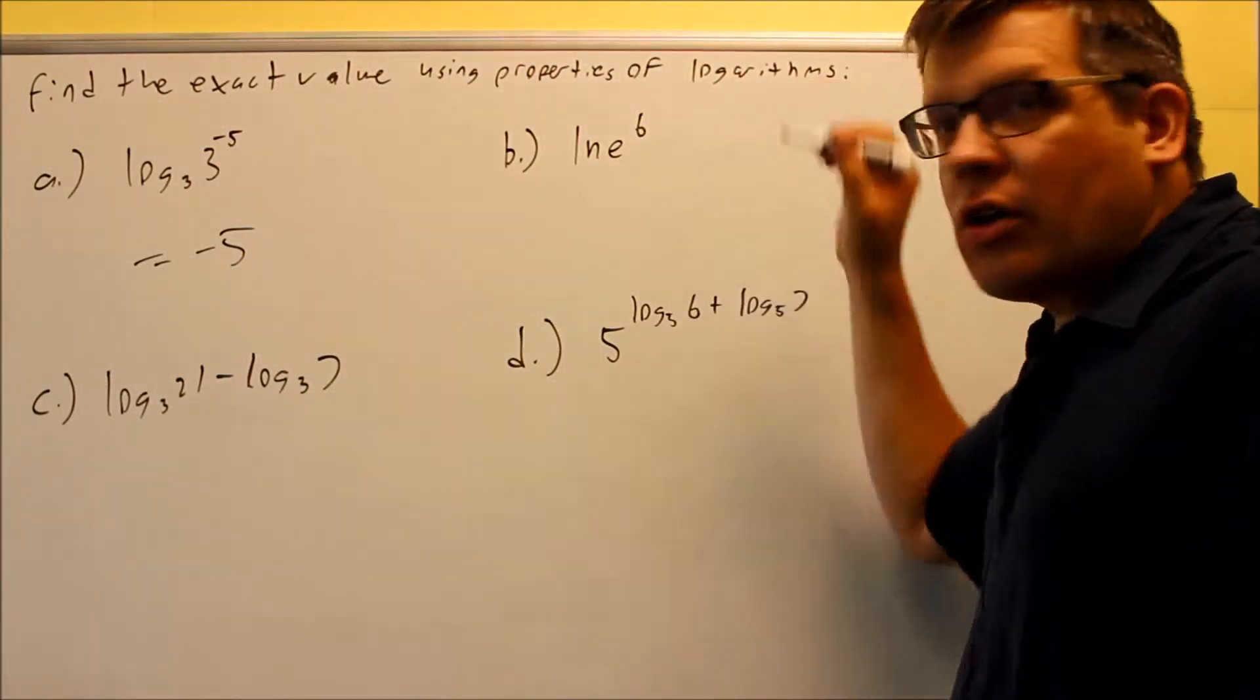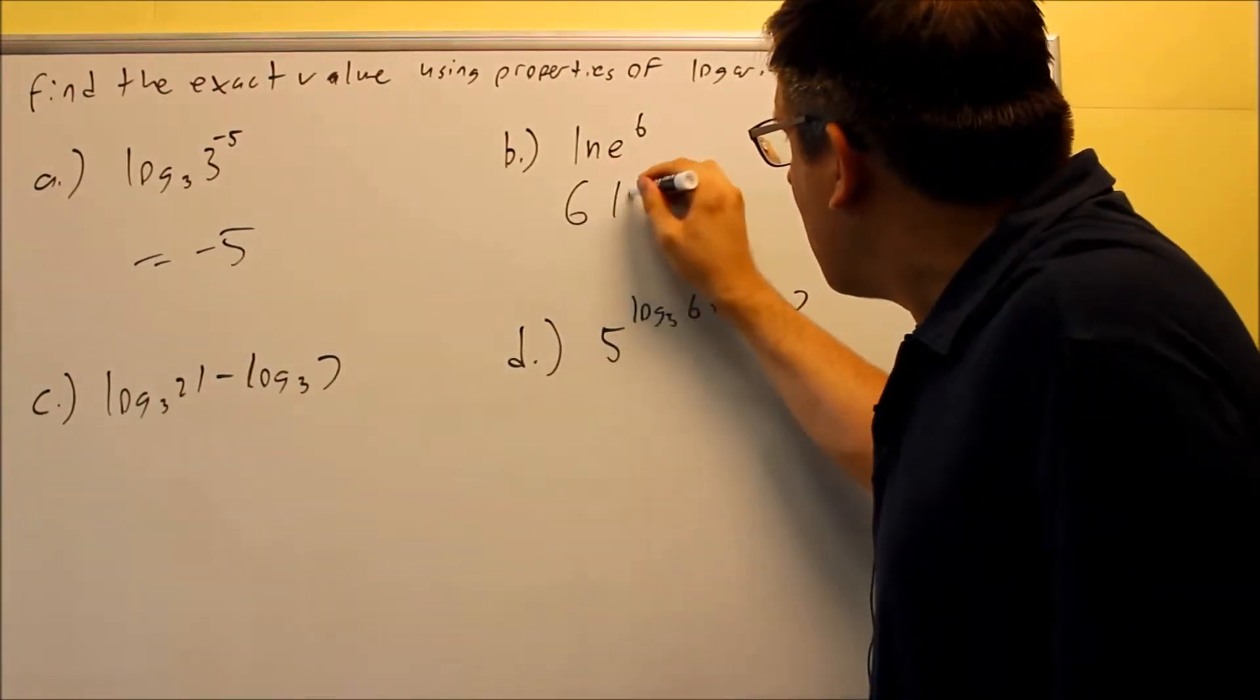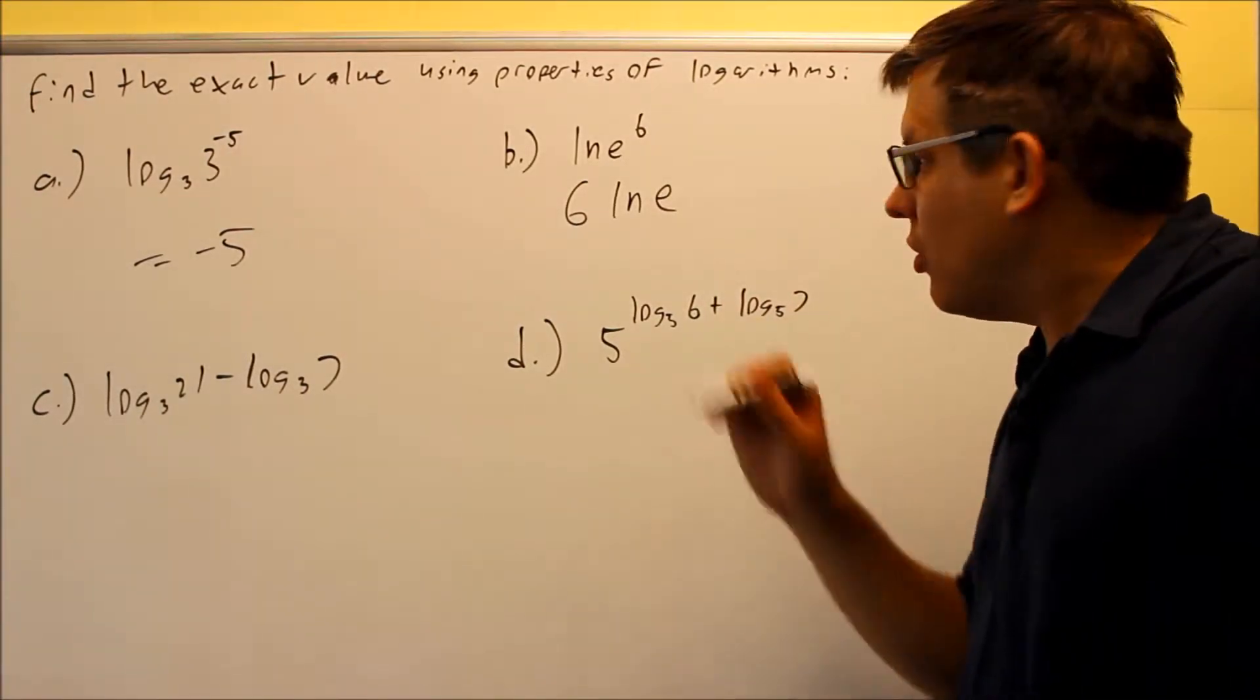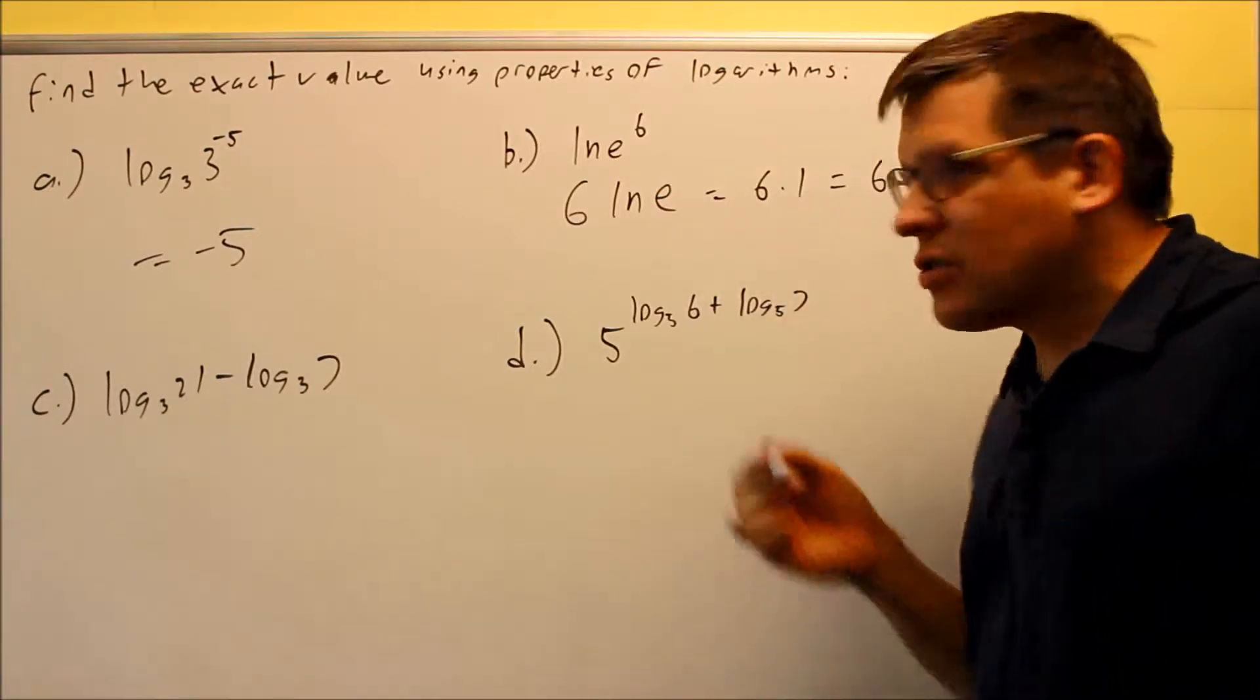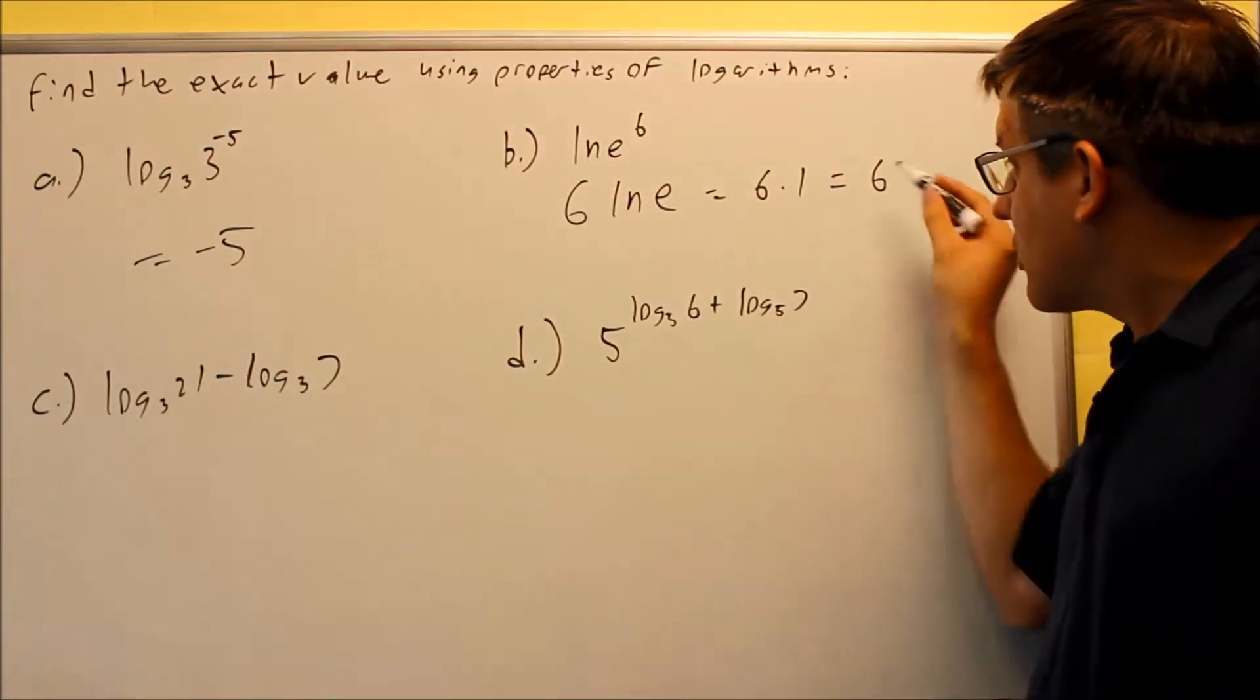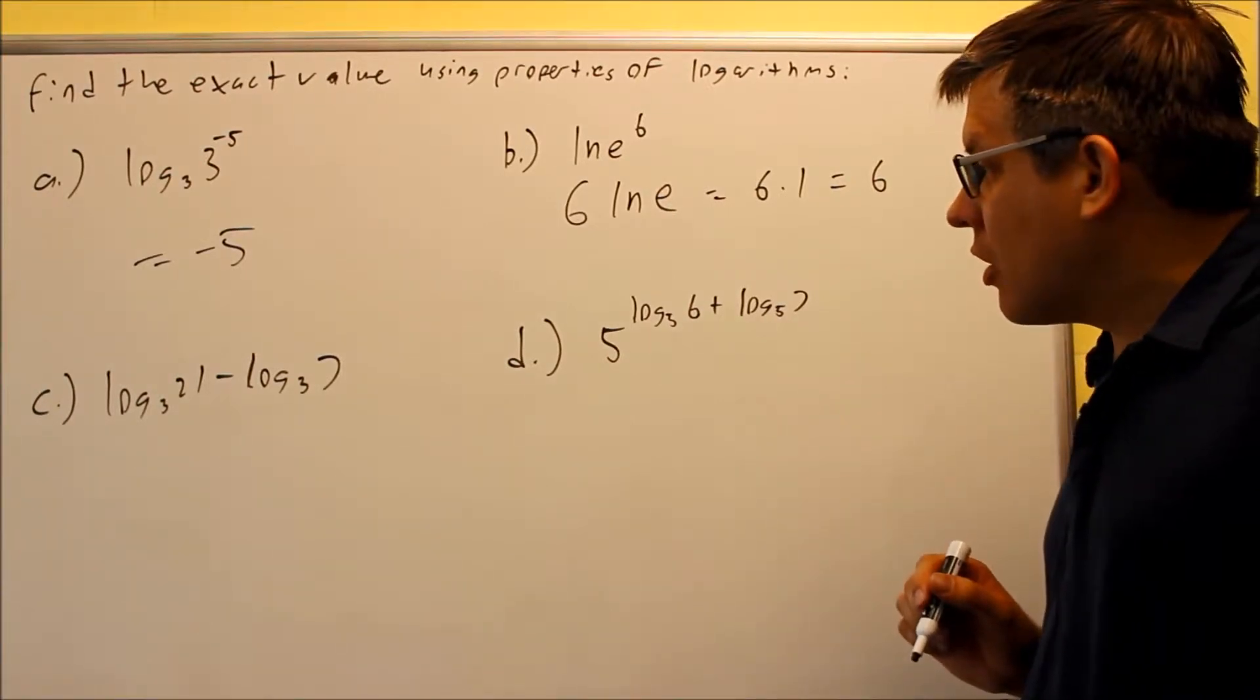Now, suppose you wanted to use rule number 5 on part B. We could bring the 6 down front. You'd have 6 times ln e, and then ln e, as we had in one of our examples in the previous video, is equal to 1. So that would be 6 times 1, which gives you 6. Or we could just use rule 4 directly and cancel it out completely, and that's equal to 6. Either way you look at it, both would be correct.